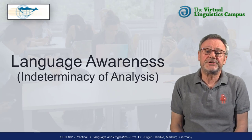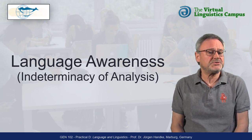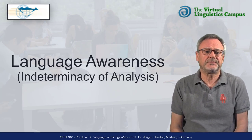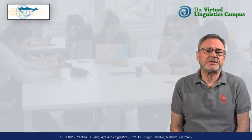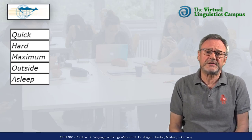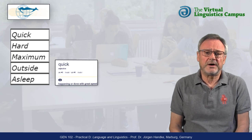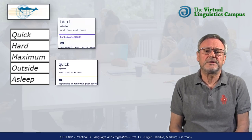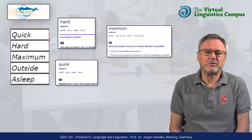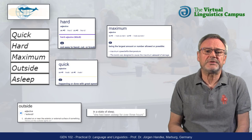Let's look at the homogeneity of word classes in this practical. Here is a set of words that in standard dictionaries are all classified as adjectives: Quick, Hard, Maximum, Outside, and Asleep.